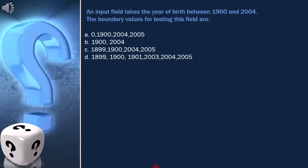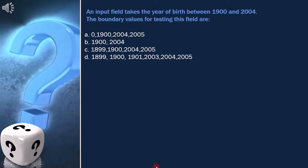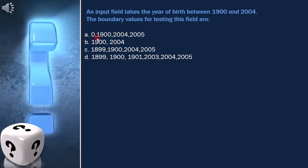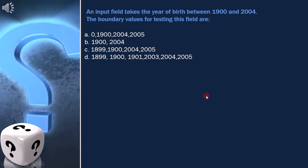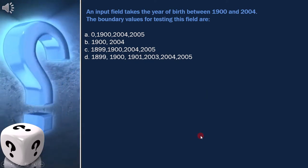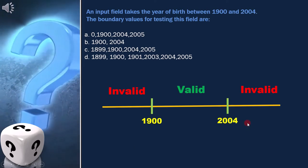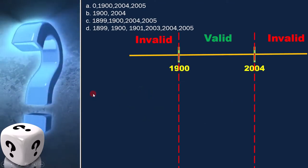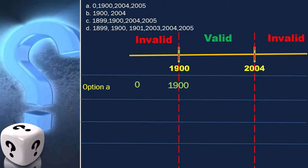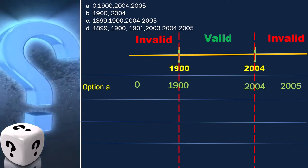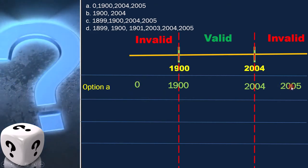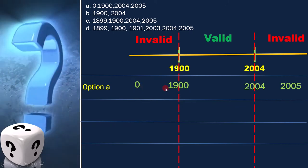Here the question is: an input field takes the year of birth between 1900 and 2004. The boundary values for testing this field are — these are the options. To solve this, we draw a boundary value analysis diagram. It's clear that 1900 and 2004 are the boundary values. For option A — 0, 1900, 2004, and 2005 — 0 and 2005 are outside the boundary, but 0 is not near 1900. That is why this is not the correct option.